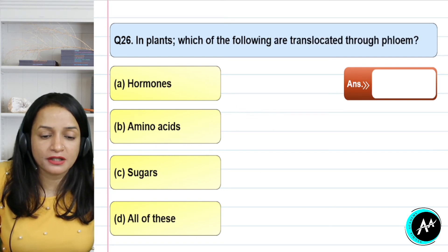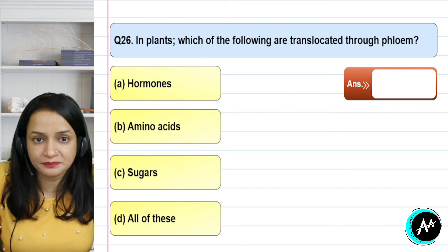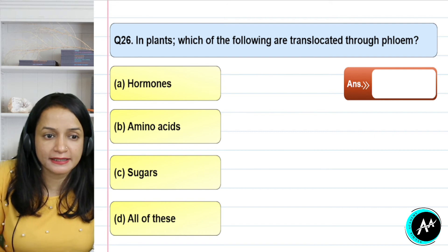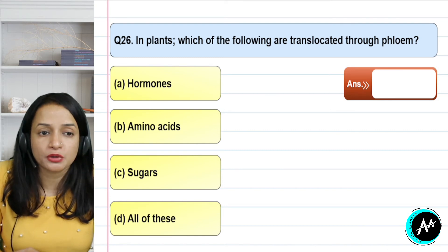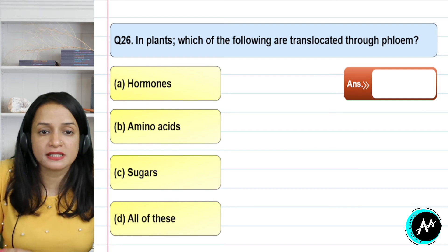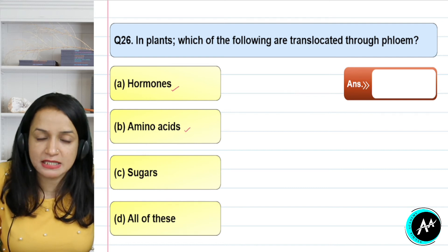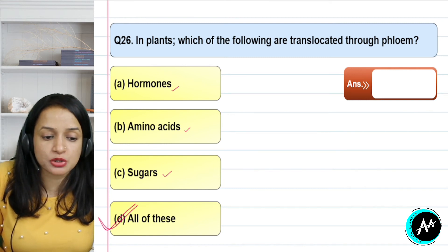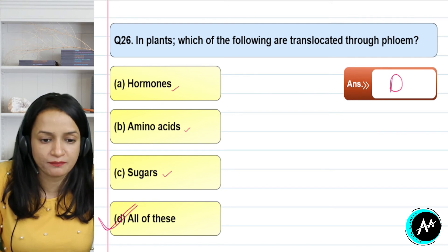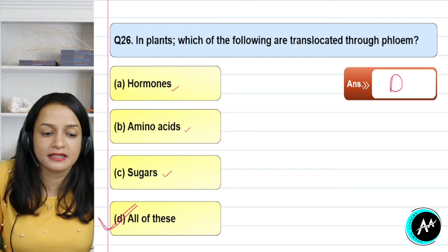Question 26: which of the following are translocated through the phloem? Phloem translocates food from source to sink; the transportation can be bidirectional — both upward and downward — because food must reach every part of the plant. Through phloem, hormones are also transported, amino acids are also translocated, and sugar is definitely transported as the most important food. The correct answer for question 26 is option D — all of these: hormones, amino acids, and sugar.